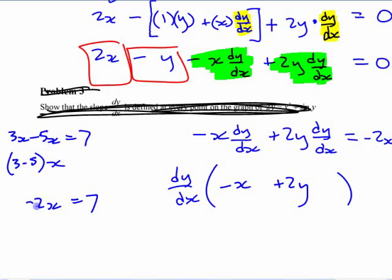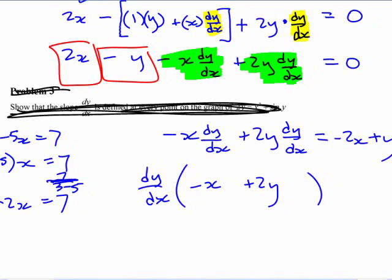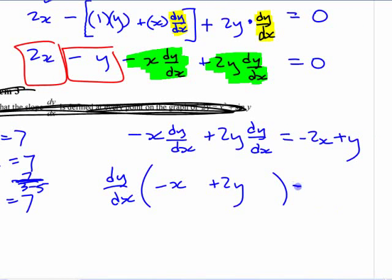Really, you could look at it as factoring it out. 3x minus 5x is like 3 minus 5 times x, and then you could have said it's 7 divided by 3 minus 5. You could have done that, but you didn't, because that would make you cry in grade 8. It's not going to make you cry now, hopefully. Then to solve this, you have dy/dx equals negative 2x plus y over negative x plus 2y.